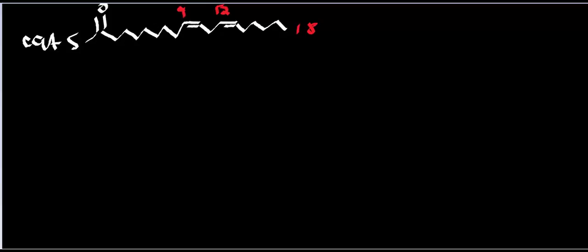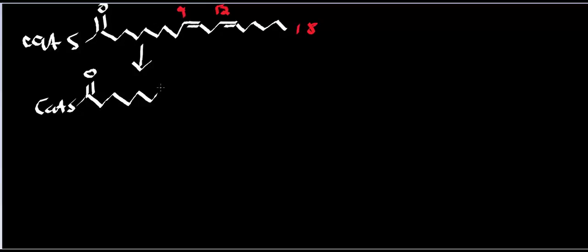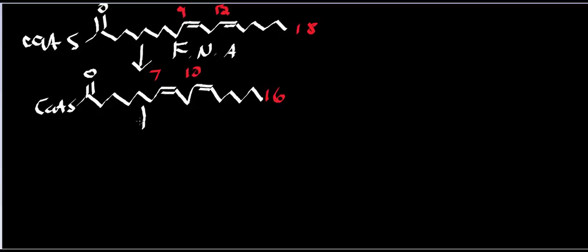What I want to do is figure out exactly how much of everything we're going to get from this. I'll abbreviate FADH2 as F, NADH as N, and acetyl-CoA as A. Let's do one round of beta-oxidation. In one round, we shorten by two carbons, so the double bond at carbon 9 is now going to be at carbon 7. I generate an FADH2, an NADH, and an acetyl-CoA.